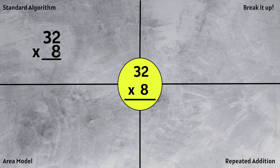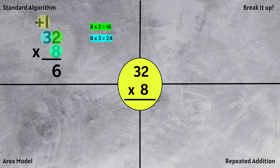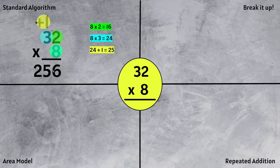The first step is to multiply 8 times 2. We know that 8 times 2 equals 16. We need to carry the 1 from the tens place and bring down the 6 from the ones place. Now we multiply 8 times 3, which equals 24, but we need to add the 1 that we regrouped from the 16. 24 plus 1 is 25, so the product of 32 times 8 is 256.